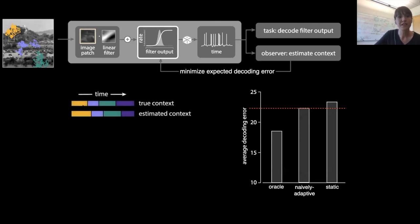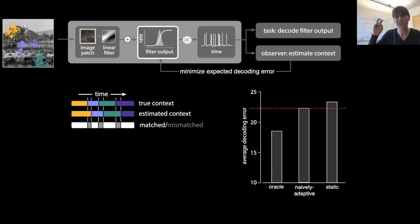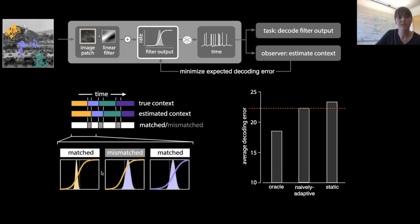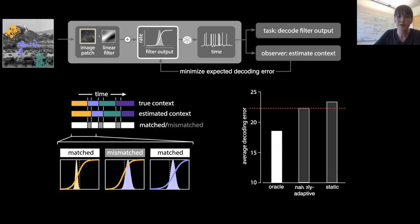If we build a code like this, its performance is intermediate between the oracle code and the static code — I'll refer to this as the naively adaptive code. The reason it has higher error than the oracle is because it uses a context estimate rather than the true context. That estimate can be wrong. If the context is changing over time, there will be matched periods — when the estimate is correct — and mismatched periods — when the estimate is incorrect, meaning the system is using the wrong nonlinearity. A large fraction of the naively adaptive code's error arises during these mismatched periods.